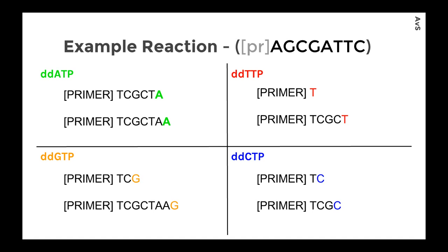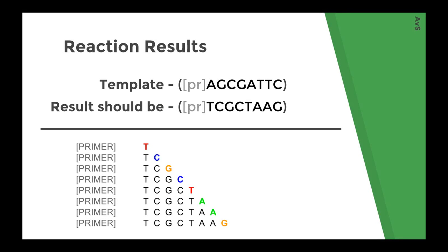For every G that's in the corresponding sequence, there's going to be strands, fragments, that end with a ddNTP version of guanine. And so, now you have all of these fragments of different lengths. And these fragments of different lengths, when lined up, can give you the result. The result should be, as I said in the previous slide, TCGCTAAG. And so, here you can see, if we line up all of our resulting ddNTP sequences, we have that sequence. Here, TCGCTAAG is lined up, diagonally going down. And that's because each of these fragments are of different lengths.